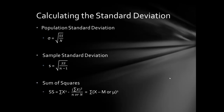Here are the formulas for calculating the standard deviation. The first is for the population — sigma (σ) is the symbol — and the formula is the square root of the sum of squares divided by the size of the population. The second is for the sample standard deviation, abbreviated S. It's the same formula, but the denominator uses lowercase n minus one instead of N.